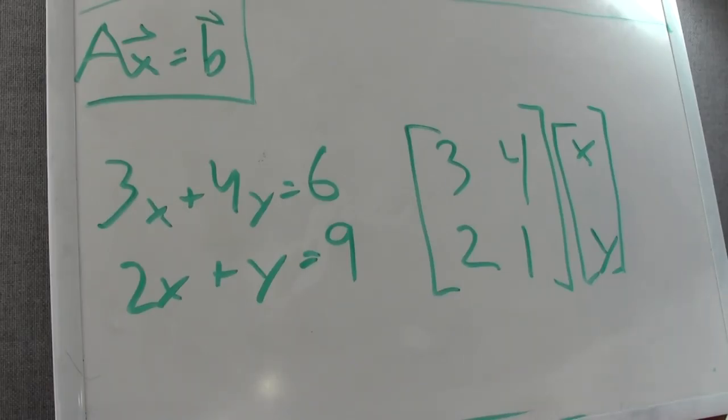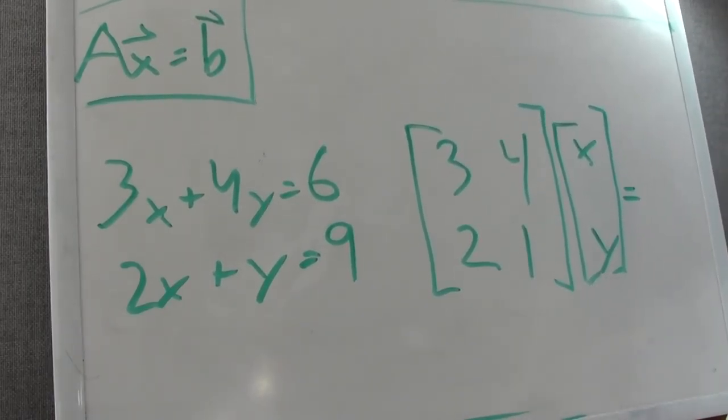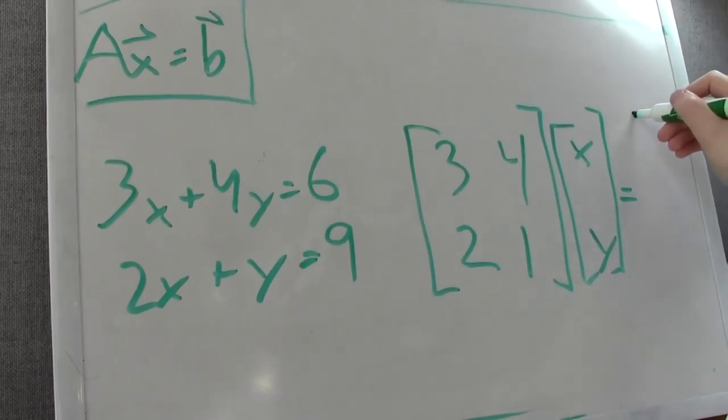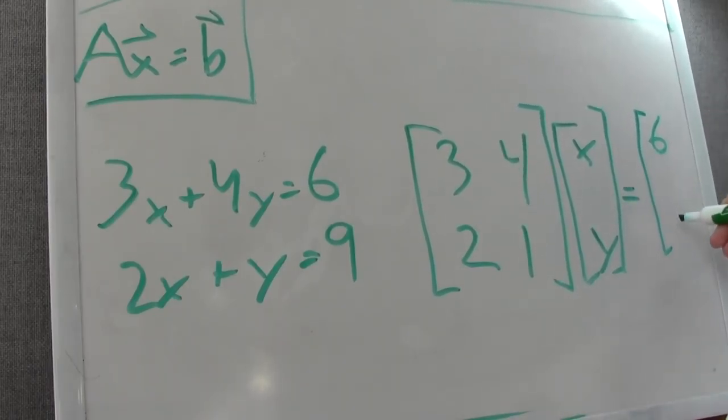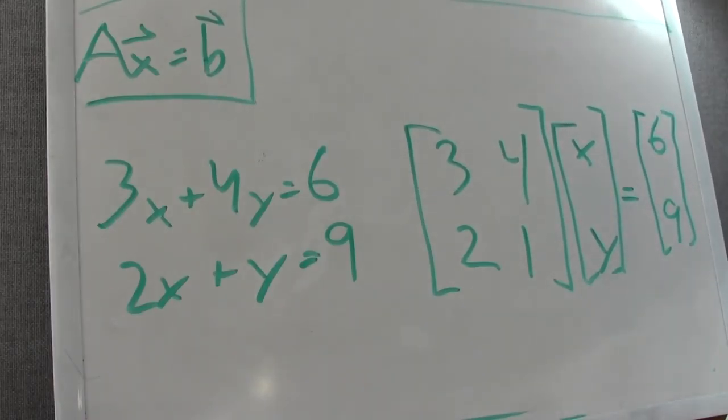We call that a vector. A vector is just a one-column matrix. It's the same thing, so don't get confused when people are calling vectors or matrices—it just means one column. And then we make another vector for the answer, which is 6, 9.